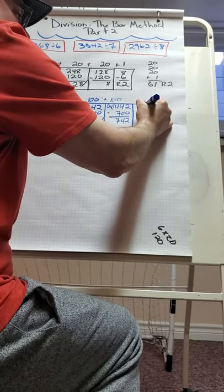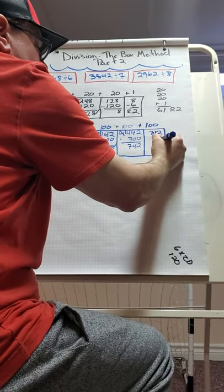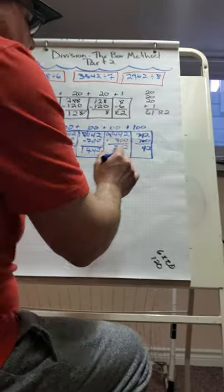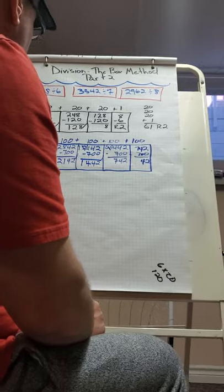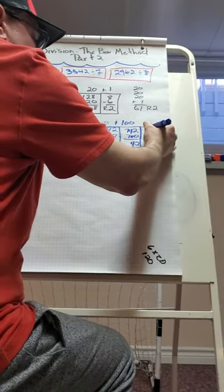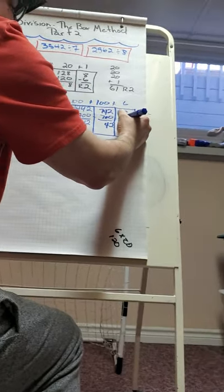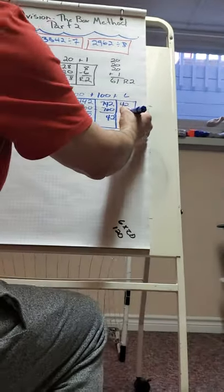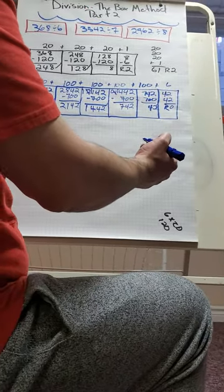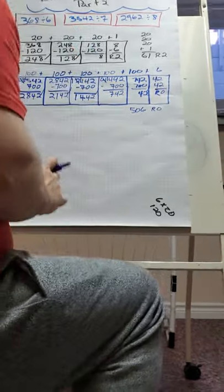I extend the box, carry up 742, plus 100, multiply 7 by 100 giving 700, subtract: 2 minus 0 is 2, 4 minus 0 is 4 — left with 42. I know 7 times 6 is 42, so I extend the box one more time, carry up 42, put 6 up top, 7 times 6 is 42, subtract: 2 minus 2 is 0, 4 minus 4 is 0 — remainder is 0. Adding up: 100+100+100+100+100+6 = 506 remainder 0.